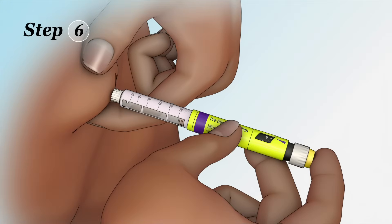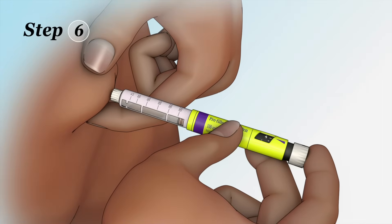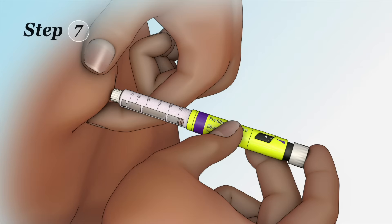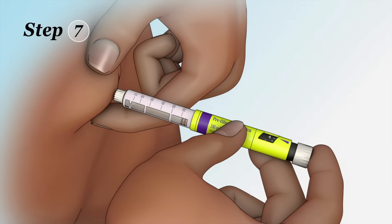Step 6: Push the pen's injection button all the way down to inject the insulin into the fat tissue beneath your skin. Slowly count to 10 before removing the needle to make sure you injected all of the insulin. Step 7: Pull the needle straight out to remove it.